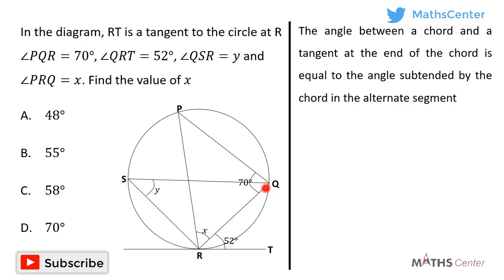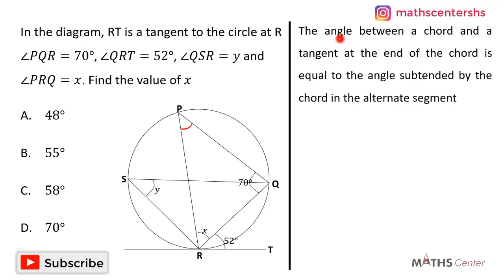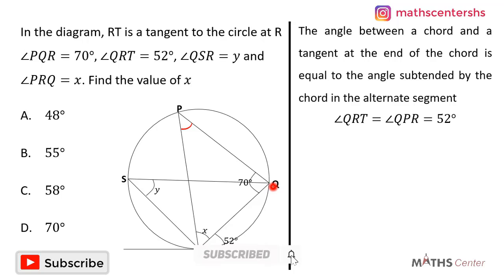By the alternate segment theorem, the chord QR forms angle QPR in the alternate segment. The theorem states that angle QRT, which is 52 degrees, is equal to angle QPR. So angle QPR is also 52 degrees.